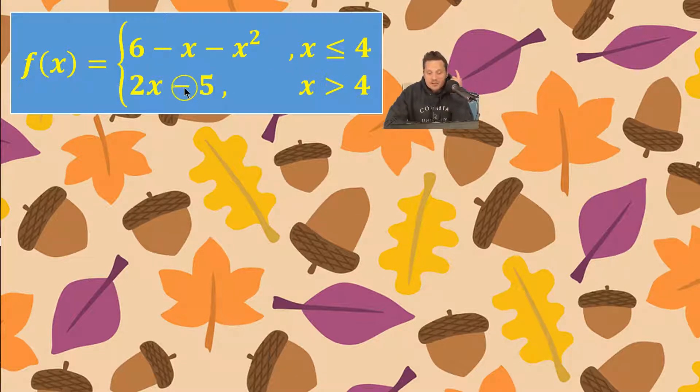On the bottom I have 2x minus 5 and that applies when x is greater than 4. For example when x is say 4.00001 that is greater than 4, so then to find the value of the function you would plug that into 2x minus 5.